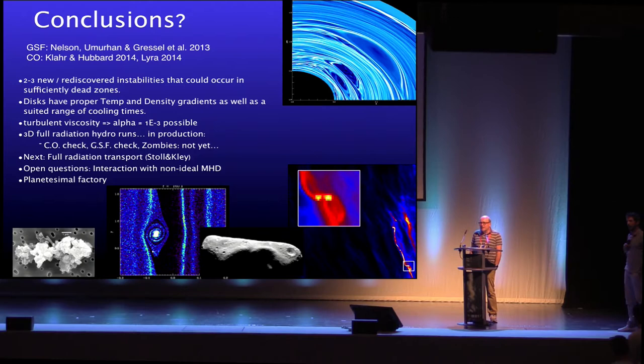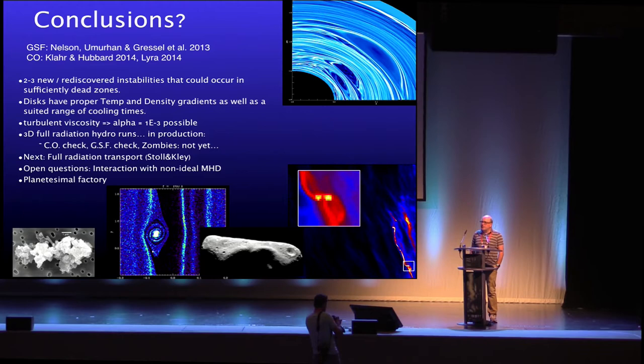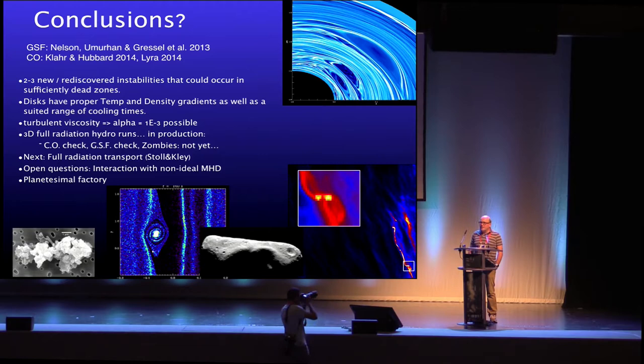Q: Could you comment on the effect these instabilities have on the vertical thickness of your disks? A: Basically no effect. All the turbulence is strongly subsonic — even in the magnetorotational instability case you have Mach numbers of 0.05 to maybe 0.1 — which means the vertical thickness is completely dominated by gas pressure, not by turbulent motions.